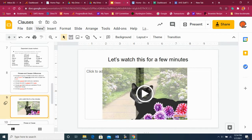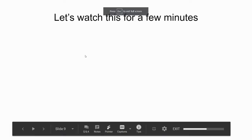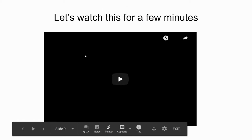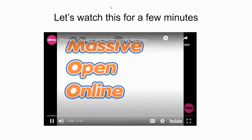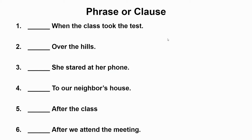So that just gives you a little bit of an idea there. Now let's look at some practice examples: phrases and clauses. First one — 'when the class took the test.' Think to yourself: is that a phrase or a clause? I have 'class,' which is a noun, a subject, and I have 'took,' which is your verb, your predicate. Subject and predicate — it's a clause.